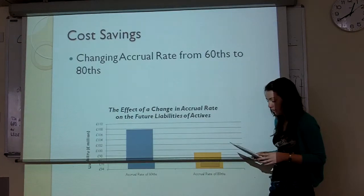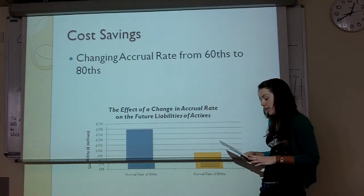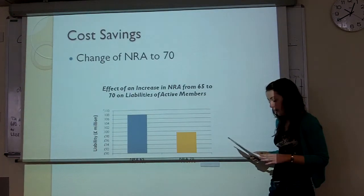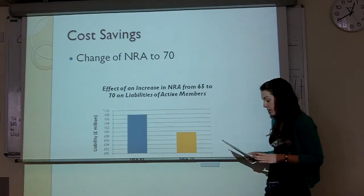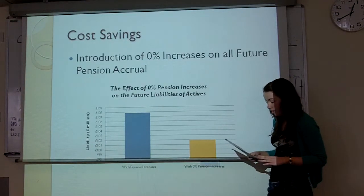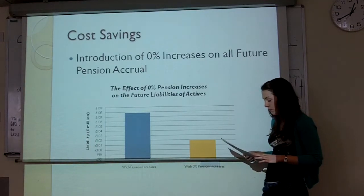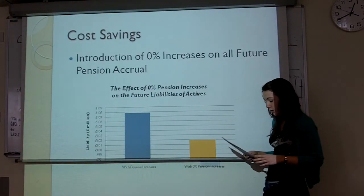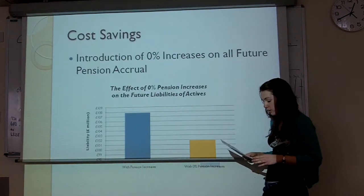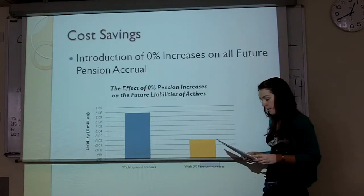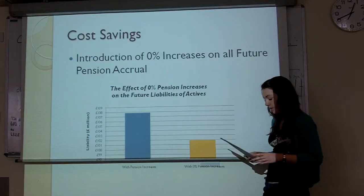We suggest changing the accrual rate from 1/60 to 1/80, which as you can see in the graph makes a saving of £8,850,405. We propose to change the normal retirement age to 70, in line with the increasing life expectancy of the population, which would make a significant saving of £8,349,238 on our scheme as shown in the graph. An additional cost saving would be to introduce 0% increases on all future pension accruals. Although not favourable with policy members, it makes a cost saving of £52,131,040, which in total would leave us just £1 million short on company liability. Even without changing the future pension accrual increase to 0%, we still save a total of £18,564,693 per annum, which will make it a lot easier for us to recover from our 58.5% funding level.